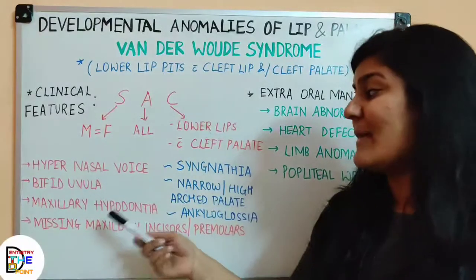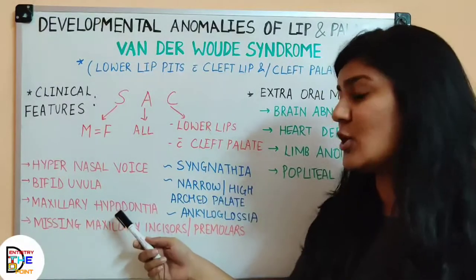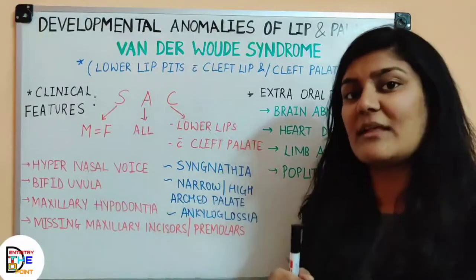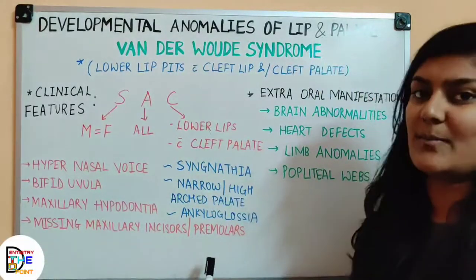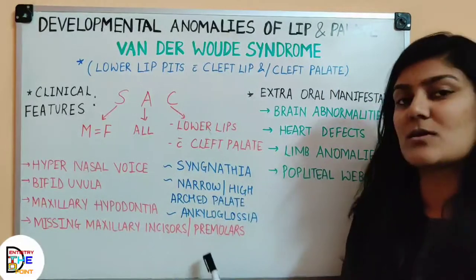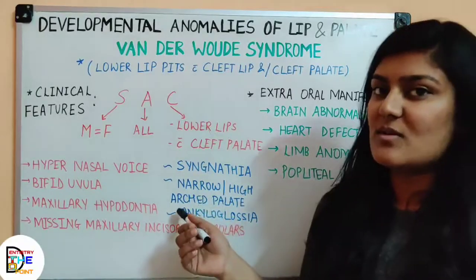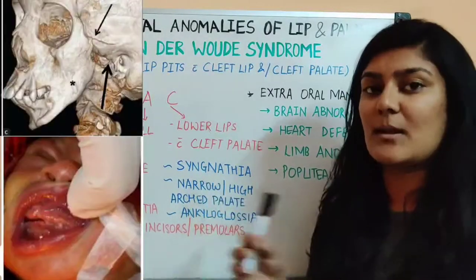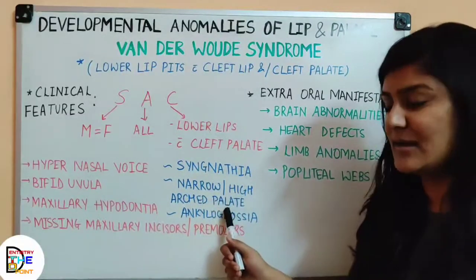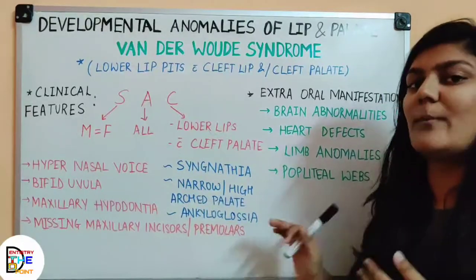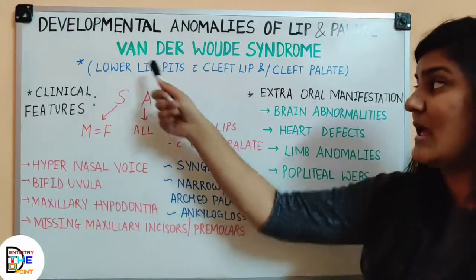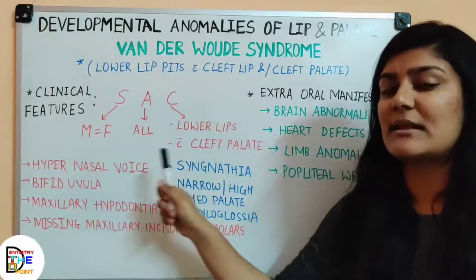Additional features include maxillary hypodontia — hypodontia means missing teeth, as opposed to anodontia (complete absence) or hyperdontia (extra teeth). The missing teeth are specifically maxillary incisors and premolars. Other features include syngnathia (fusion), narrow and high-arched palate, ankyloglossia (tongue tie), and other developmental anomalies of the tongue, which will be covered separately.